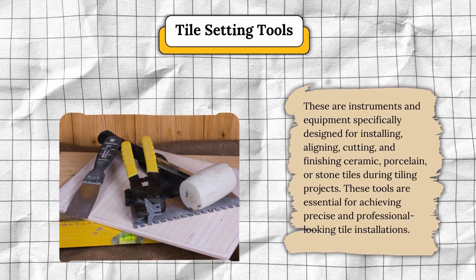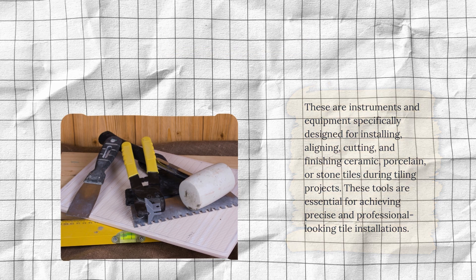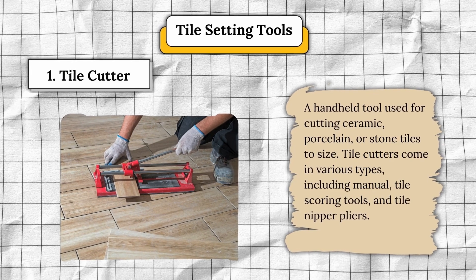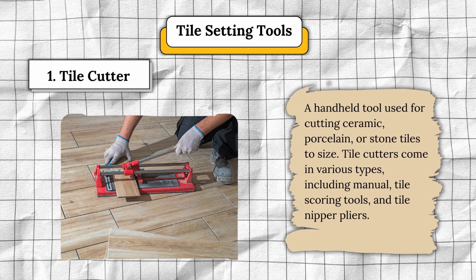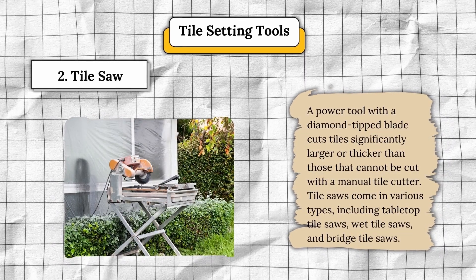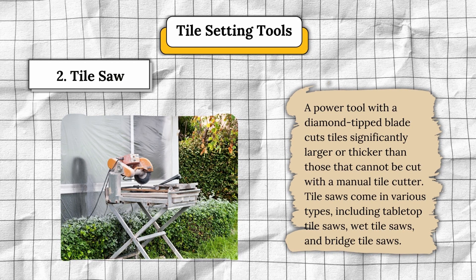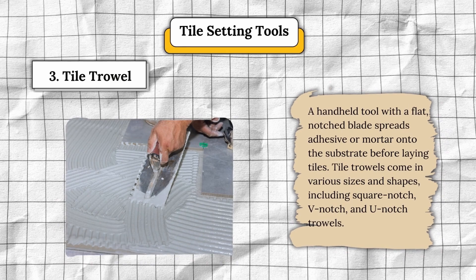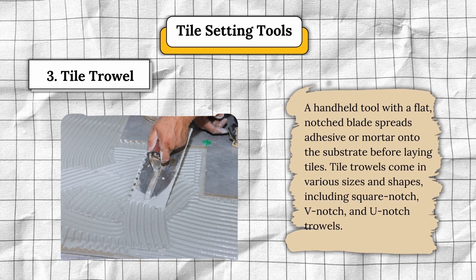The fifth classification is tile setting tools. These are instruments and equipment specifically designed for installing, aligning, cutting, and finishing ceramic, porcelain, or stone tiles. Number one, tile cutter — a handheld tool for cutting tiles to size, available in manual, tile scoring, and tile nipper plier types. Number two, tile saw — a power tool with a diamond-tipped blade for cutting tiles larger or thicker than those a manual cutter can handle, including tabletop, wet, and bridge tile saw types. Number three, tile trowel — a handheld tool with a flat notched blade that spreads adhesive or mortar onto the substrate before laying tiles, available in square notch, V-notch, and U-notch types.